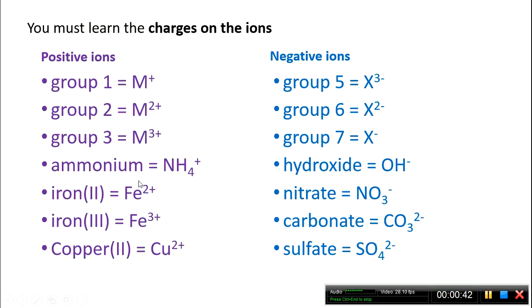With the transition metals across the middle of the periodic table, they're always shown with Roman numerals telling you about the charge of the ion. So, iron(II) has a 2+ charge, iron(III) has a 3+ charge, and copper(II) has a 2+ charge.